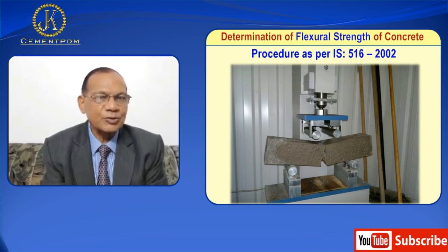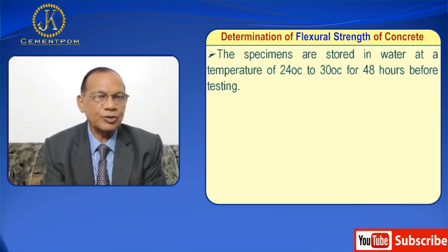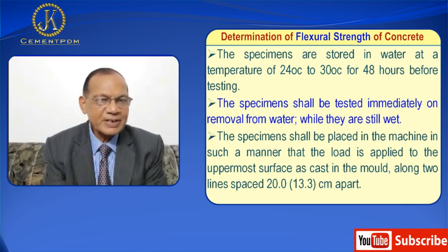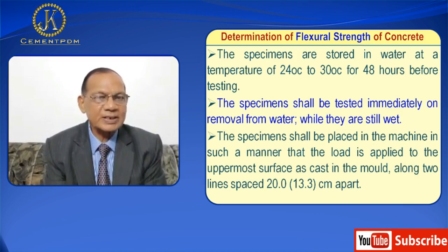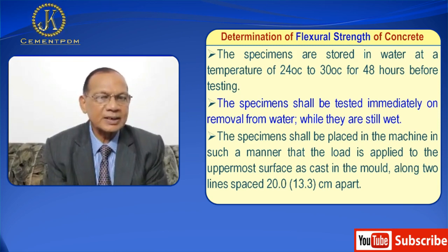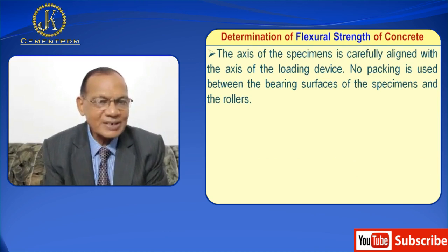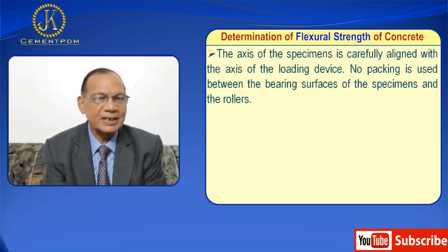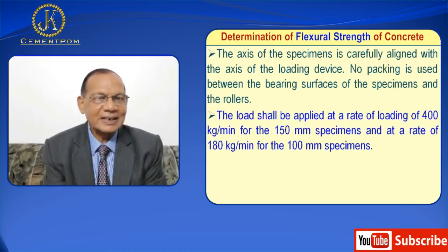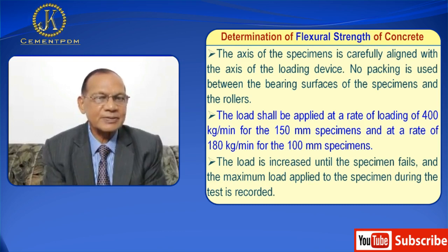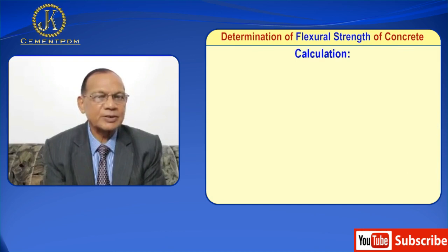The specimens are stored in water at a temperature of 24°C to 30°C for 48 hours before testing. The specimens shall be tested immediately on removal from water while they are still wet. The specimens shall be placed in the machine such that the load is applied to the uppermost surface as cast in the mold, along two lines spaced 20 cm or 13.3 cm apart. The load shall be applied at a rate of 400 kg per minute for the 150 mm specimen and at a rate of 180 kg per minute for the 100 mm specimen. The load is increased until the specimen fails and the maximum load is recorded.